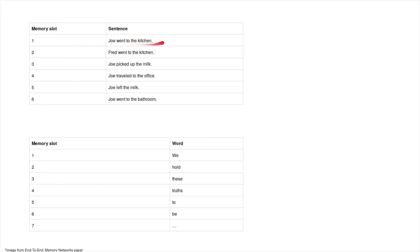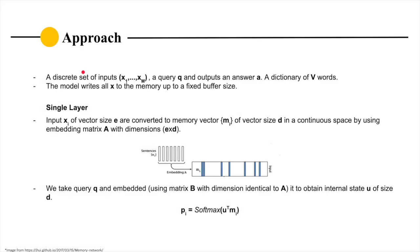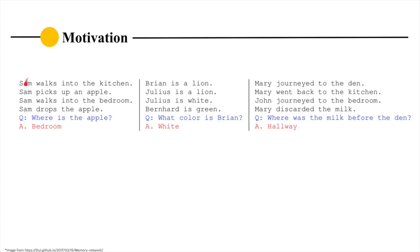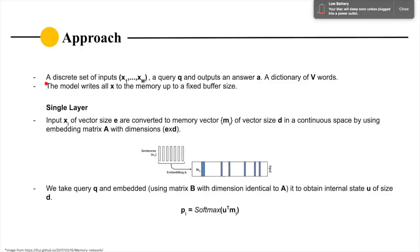Now, there are discrete inputs x1 to xm. Each xi is a sentence, so every word will be x11, x12, like Sam is x11, walks is x12, and so on. There is an input and then there is a query, which is the question. In the result, we have output, which is an answer.